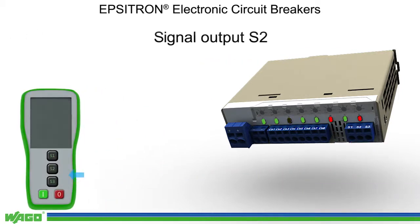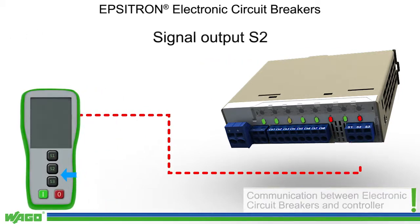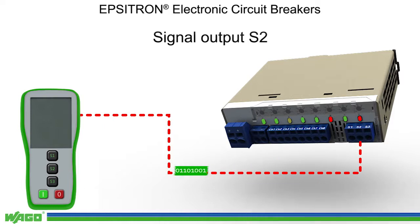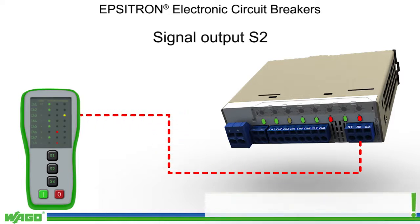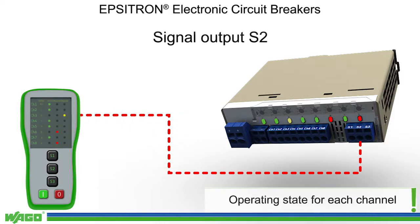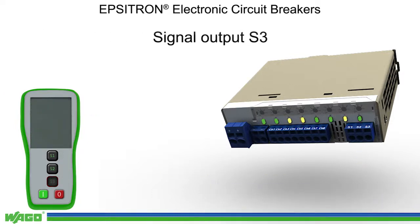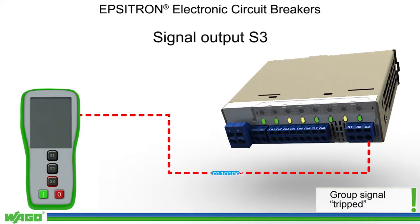Signal output S2 provides information about the operational status of each channel. The PLC receives a binary coded pulse pattern from the ECB, including operating status, input voltage, set nominal current, or for the variant with current limitation, the momentarily applied current for each channel.